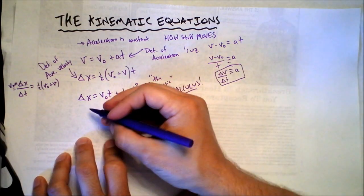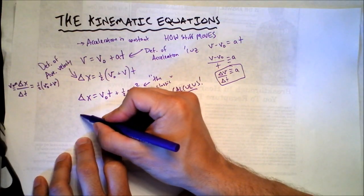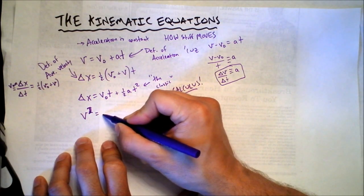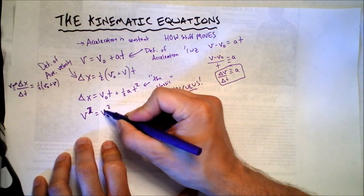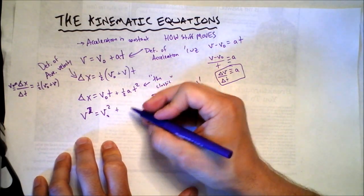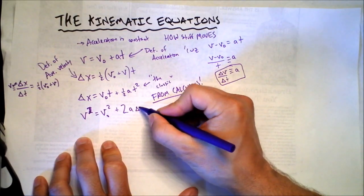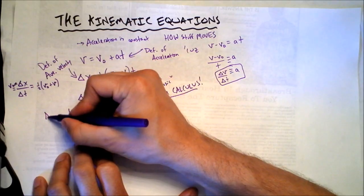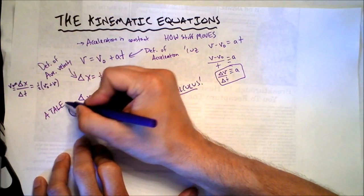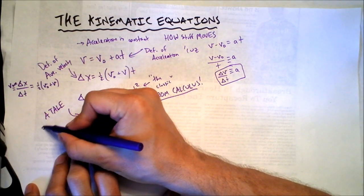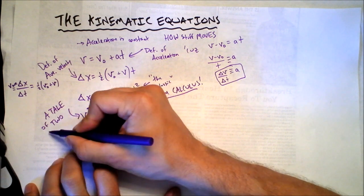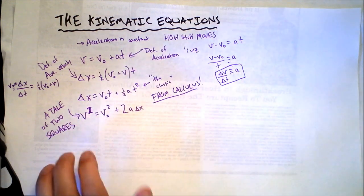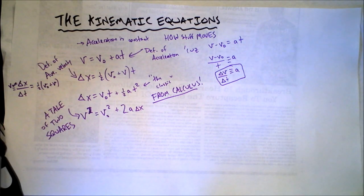The final kinematic equation that you want to have memorized is v squared equals v naught squared plus two times acceleration times how far you've gone. I call this a tale of two squirers. Ask me some questions in the comments.